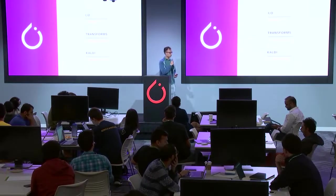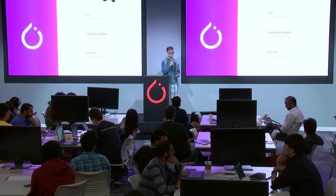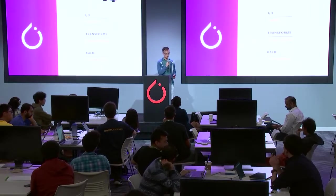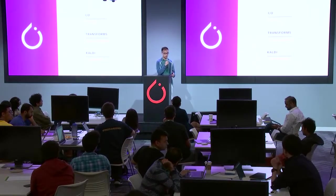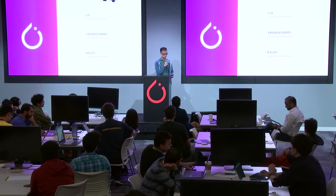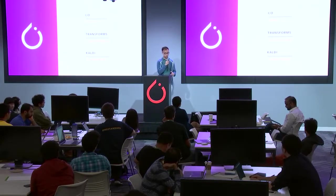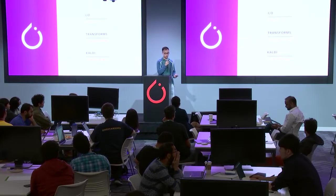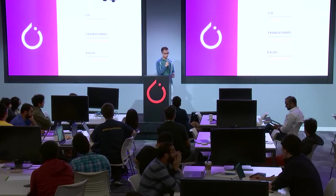For our transforms, we have neural network models that can provide you with signal processing functionalities. We have spectrogram, MFCC, and resampling, and these are all implemented in PyTorch. So you get parallelized processing as well as JIT support.